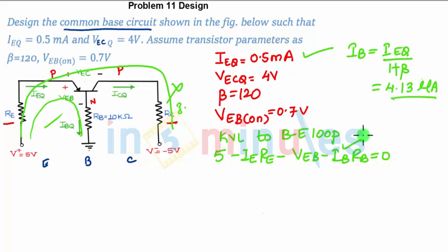You have found the value of IB. Now you know the value of IB in this equation, you know the value of IE. Do you know the value of RE? No. You know the value of VEB? Yes, 0.7V. You know the value of RB? Yes, 10k. So you can find the value of RE. After solving, you will get the value of RE as 8.517 kilohms.